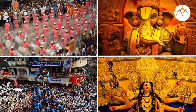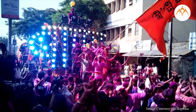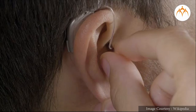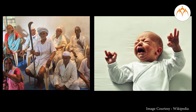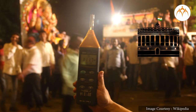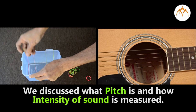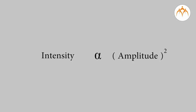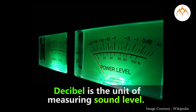During festivals like Ganesh Pooja, Dahihandi, and Durga Pooja, we normally hear loud music. Processions are accompanied with walls of speakers, and this is not good for our ears. Elderly people and infants may experience bad effects on their health. We should follow sound limits as prescribed by government or local bodies. In summary, we discussed what pitch is and how intensity of sound is measured. Intensity of vibrations is proportional to the square of amplitude, and decibel is the unit of measuring sound level.